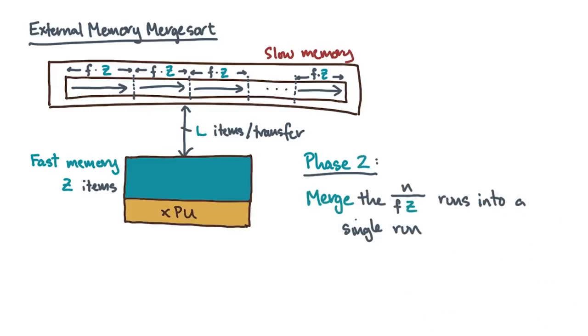Following the merge sort idea in phase two, you want to merge all the sorted runs into a single final sorted run. Before discussing that, let's analyze phase one, the partition sorting step.